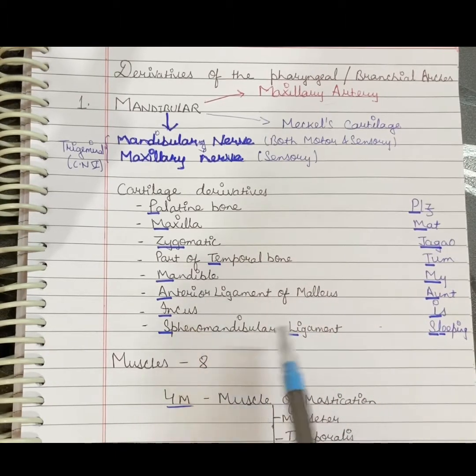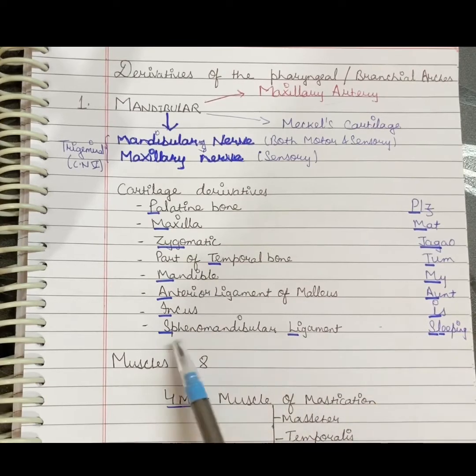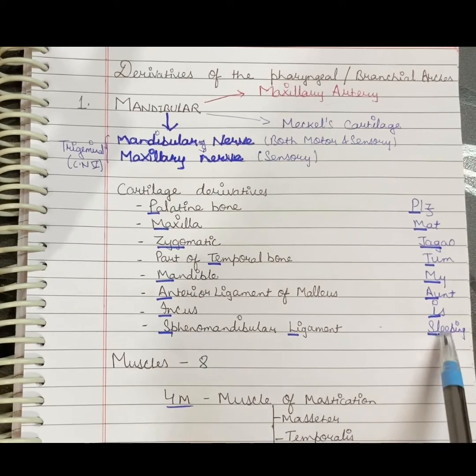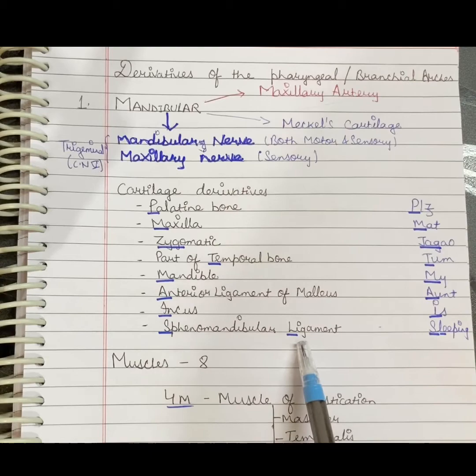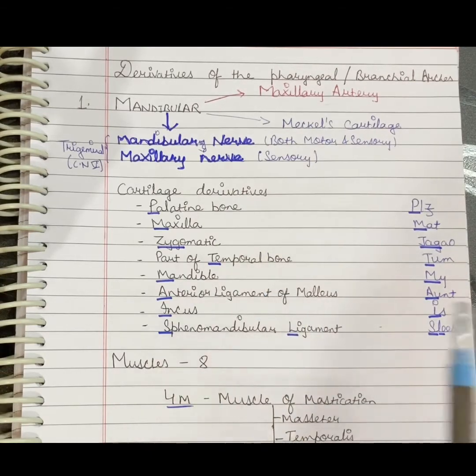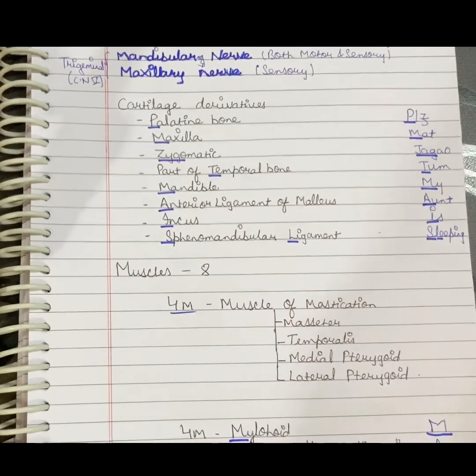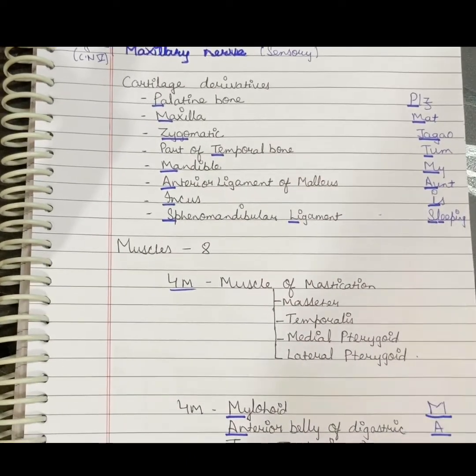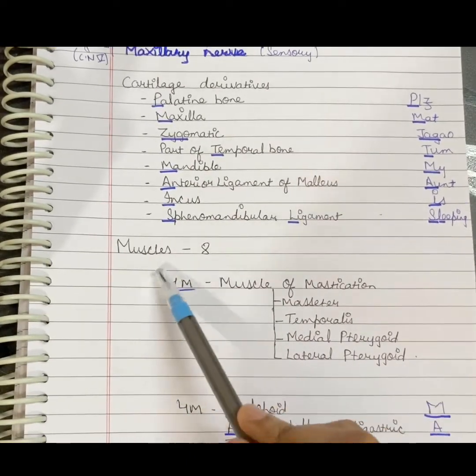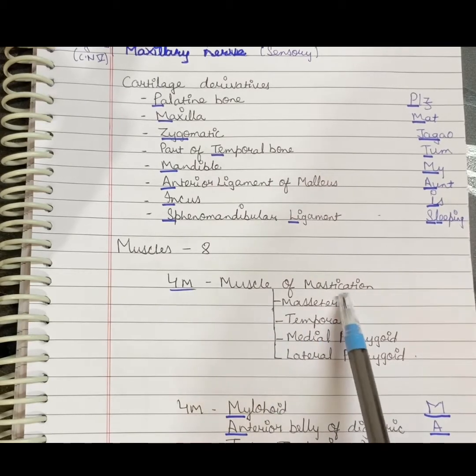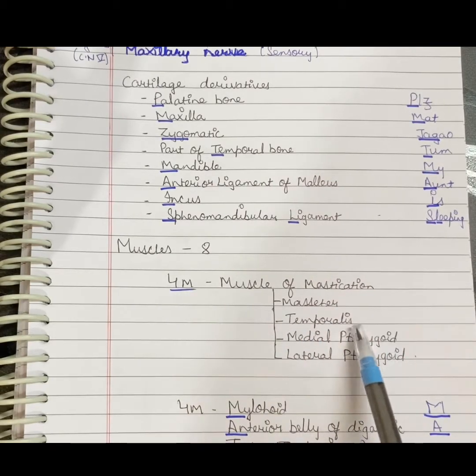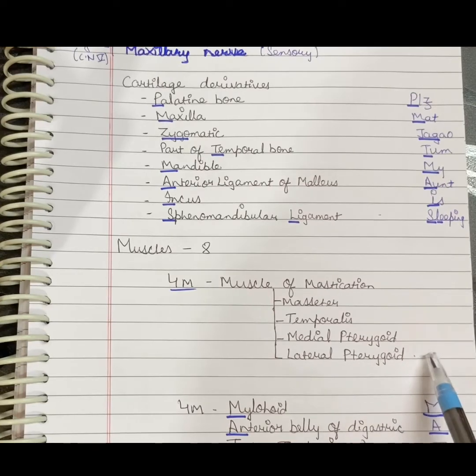We have eight muscles which are derived from the first pharyngeal arch. Four muscles can be remembered as muscles of mastication: masseter, temporalis, medial pterygoid, and lateral pterygoid.